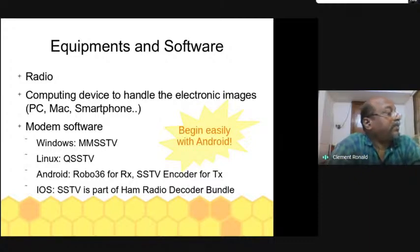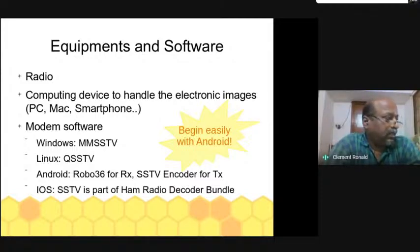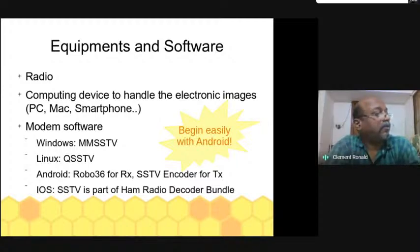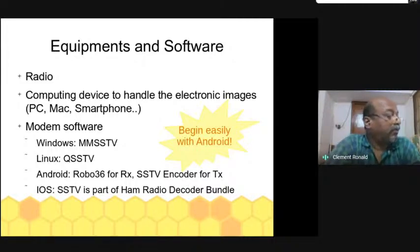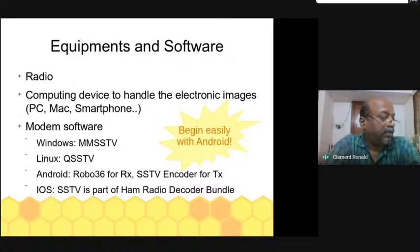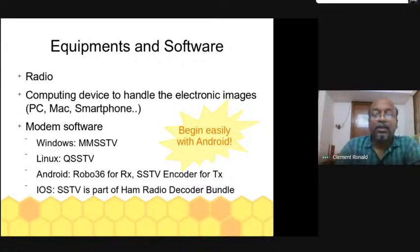On Windows, MMSSTV is a popular free software. On Linux, QSSTV is popular — I use QSSTV since I use an Ubuntu laptop. On Android, Robot 36 is very popular for receiving, but it is RX only. For TX you need other software — SSTV Encoder is available as freeware. You can even search for Robot 36 on the Play Store right now and install it, so that during the later part of the presentation when the video plays, you can try to decode the image.